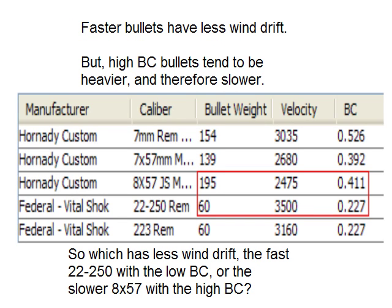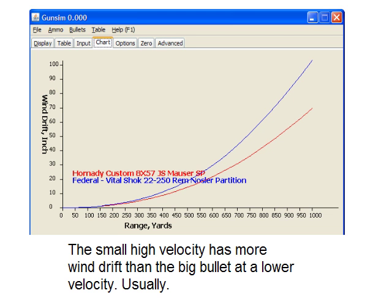However, faster bullets have less wind drift, and big bullets like the .50 cal don't go as fast as smaller bullets usually. So we have two bullets in this comparison: one's a small calibre and one's a big calibre, and the small calibre is about a thousand feet per second faster, but it isn't as streamlined because it's smaller. The small bullet has more wind drift than the bigger bullet going at a lower velocity.